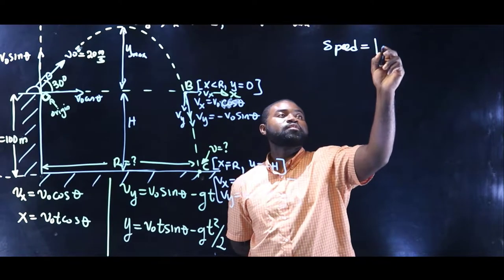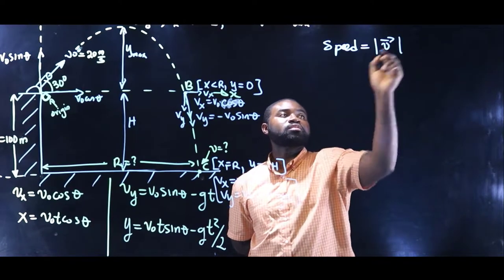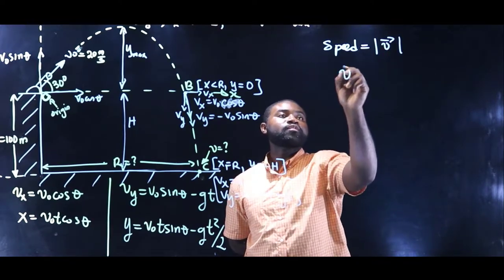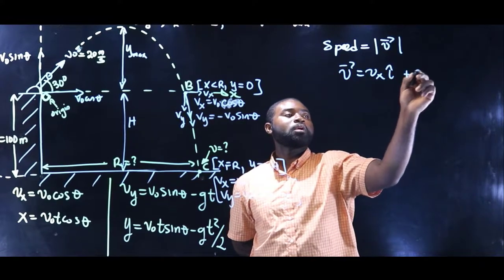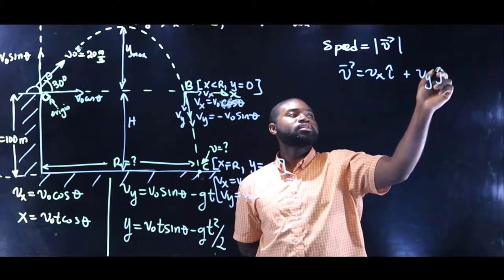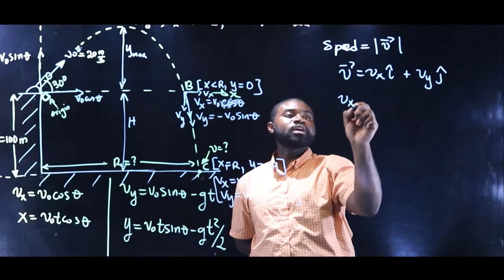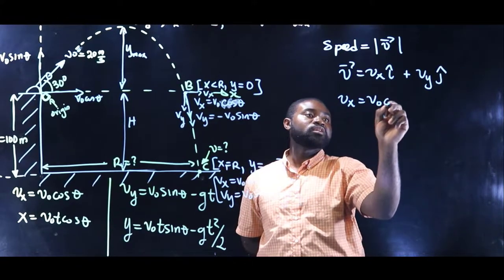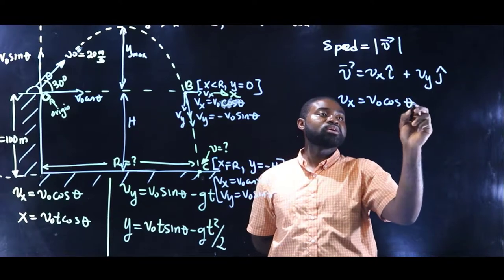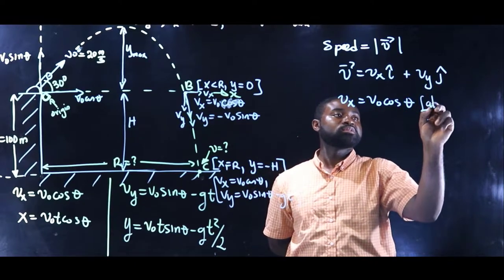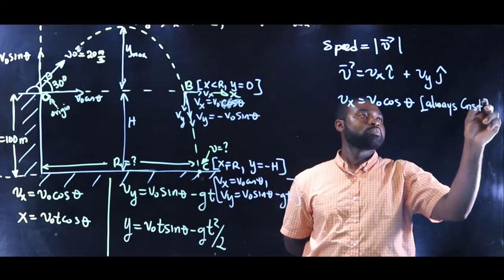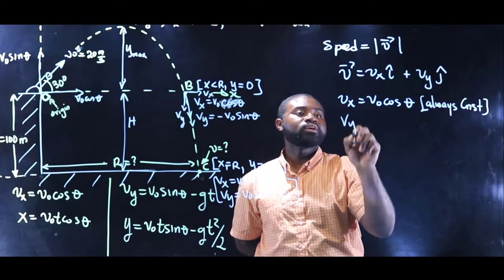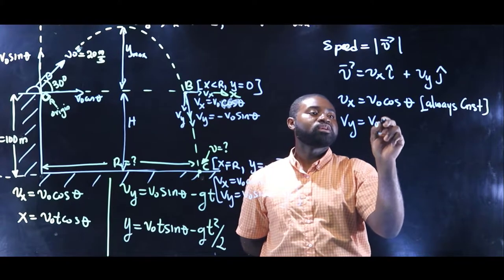I'm going to define as the magnitude of velocity, where V is Vx i plus Vy j. Remember, Vx is just V not cosine theta, it's always constant, and Vy is V not sine theta minus g t.